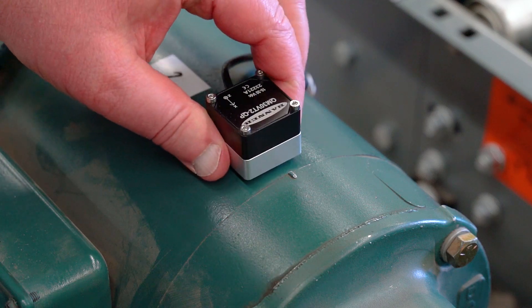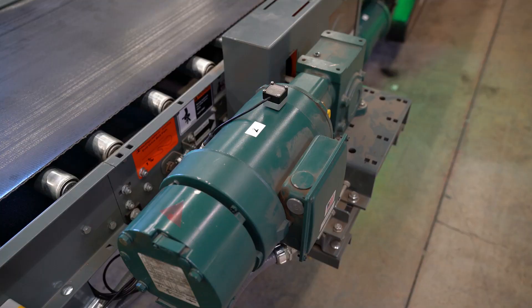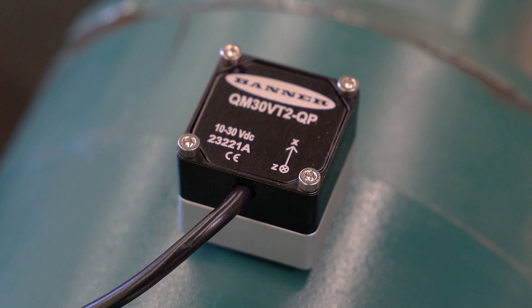When mounting the sensor to a motor, it is best practice to ensure that the x-axis is parallel to the motor shaft. The top of the sensor is marked with an arrow to indicate the direction of this axis.